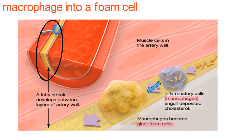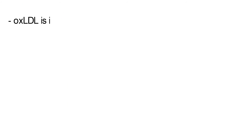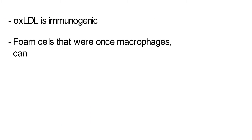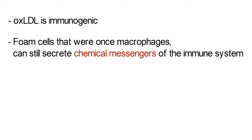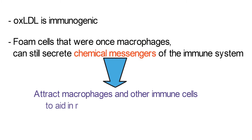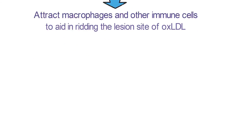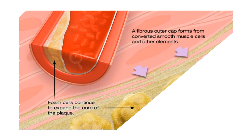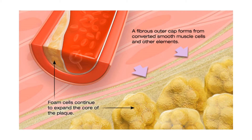In order to understand how the lesion is able to grow, it is important to remember that ox-LDL is immunogenic and the foam cells that were once macrophages can still secrete chemical messengers of the immune system. These chemical messengers attract macrophages and other immune cells to aid in ridding the lesion site of ox-LDL. However, instead of getting rid of the ox-LDL, the macrophages transition into foam cells and the fatty lesion grows as more and more of an inflammation response is signaled by the foam cells. Further contributing to the growth of the lesion is that it is also possible for ox-LDL to initiate a phenotypic switch in the smooth muscle cells of the artery.